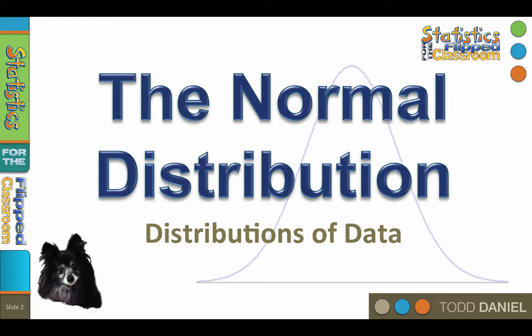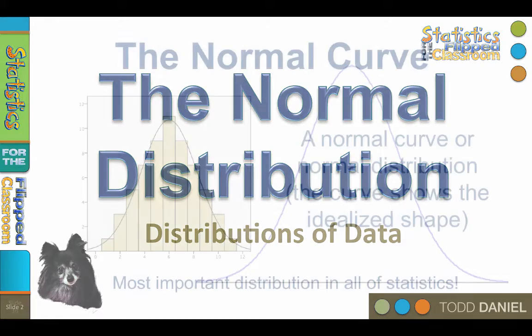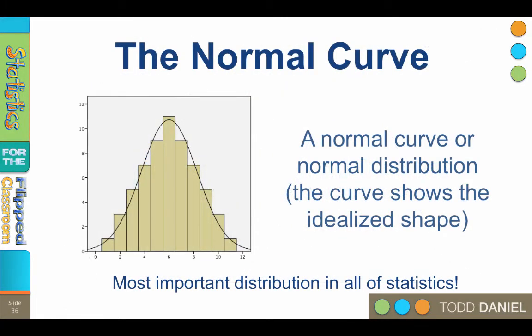Therefore, many of the statistics that we will use assume that the underlying population that we are sampling is normally distributed. When we create a histogram, if the scores are normally distributed, we could overlay a picture of a normal curve on them.